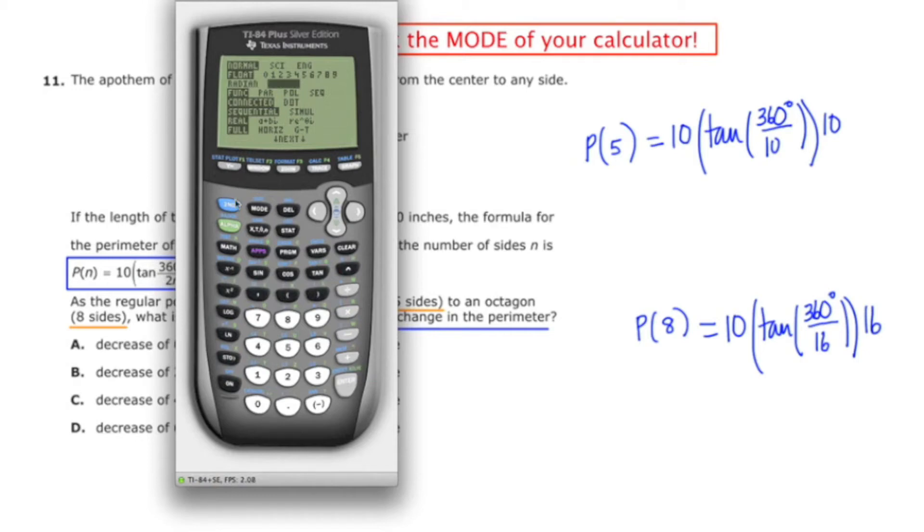And now I'm going to go to the calculating screen, and I'm going to plug in 10, and then tangent of 360 divided by 10, well that's just going to be 36, close the parentheses times another 10, and I'm going to press enter, and I get 72.65, I'll round to the nearest hundredth, 72.65.